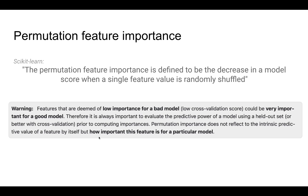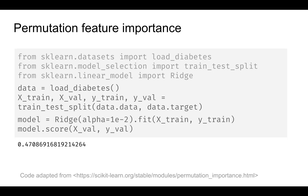There are several caveats to this, and there is a warning in the docs. One key issue is with collinear features — if you randomly shuffle just one of two collinear features, the other one is still present, and that could affect model accuracy. So this is something to keep in mind when working with permutation feature importance.